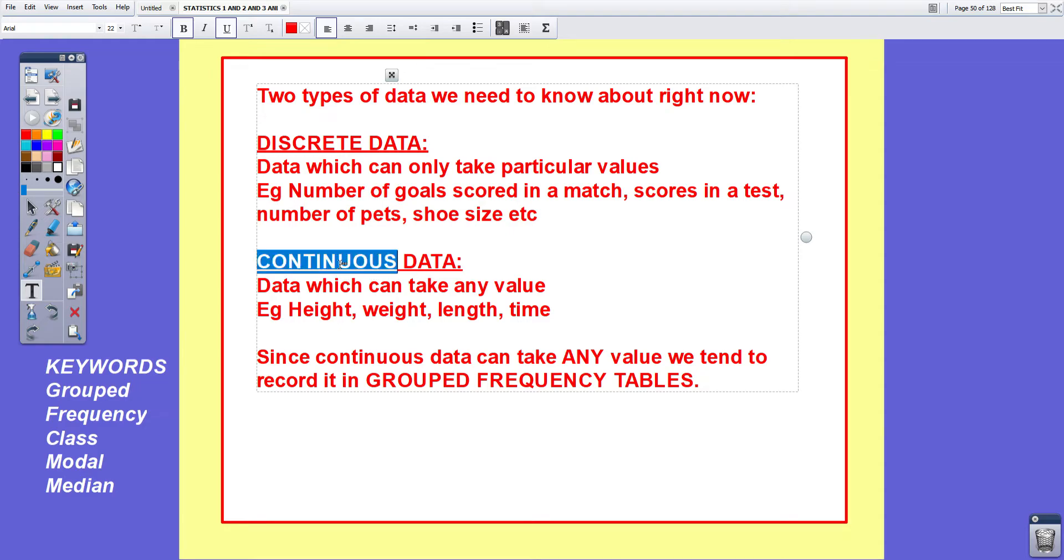Then we have continuous data. Continuous data is data which can take any value. For instance things like height, weight, length and time. These can take any value. The data is continuous. Somebody can be 156.3 centimeters, 156.31, 156.317. Any value can be used and therefore it is continuous. Since continuous data can take any value we tend to record it in grouped frequency tables.